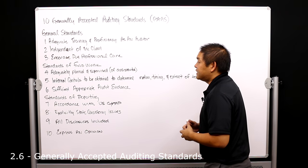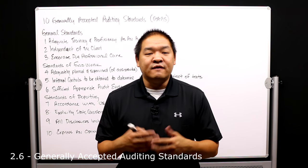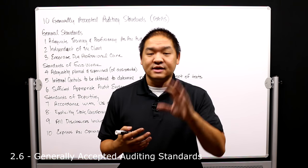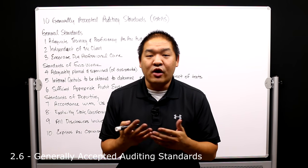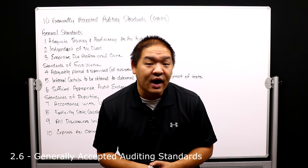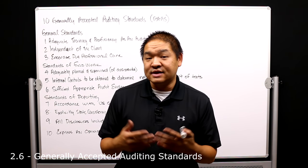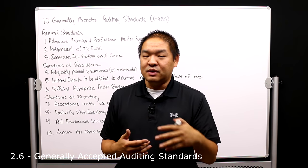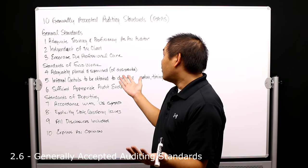Number two: the auditor must be independent of the client — independent in fact and in appearance. Independence in fact means we don't own their stock, we don't have business relationships with them that would impair our independence. Independence in appearance means that from the outside, we don't appear to have a relationship that could impair our judgment. For example, if we're frequently socializing with the client, people may see that relationship as impairing our judgment as auditors. We must be independent of that client.